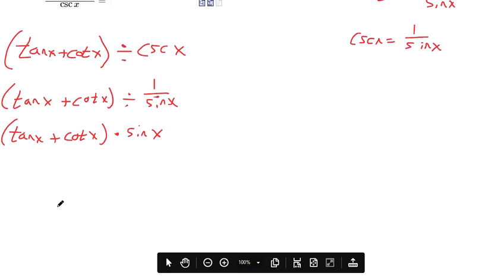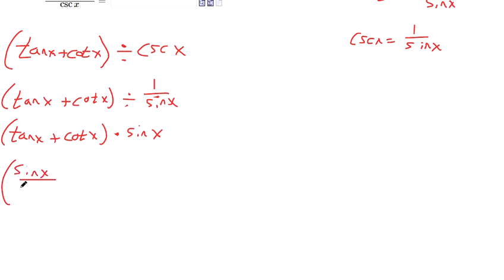And now, let's put tangent and cotangent in terms of sine and cosine like we just talked about. Tangent is sine over cosine, so we can change it like that. Cotangent is cosine over sine.